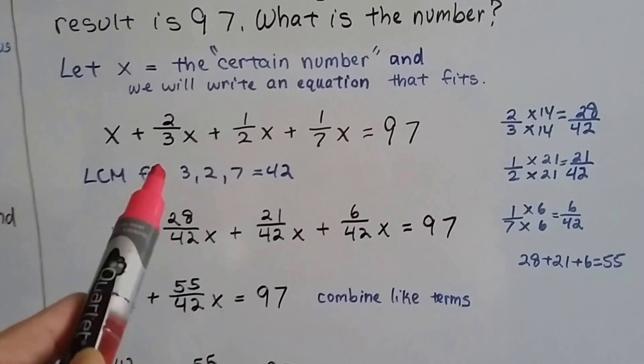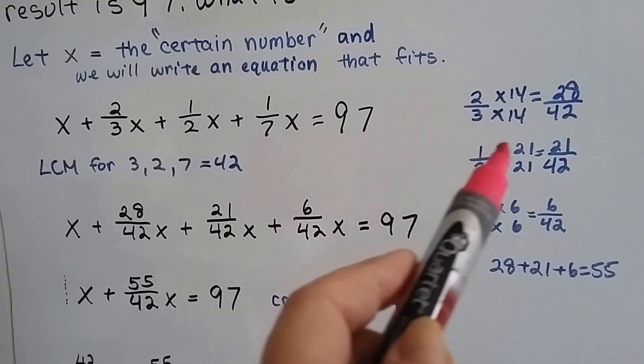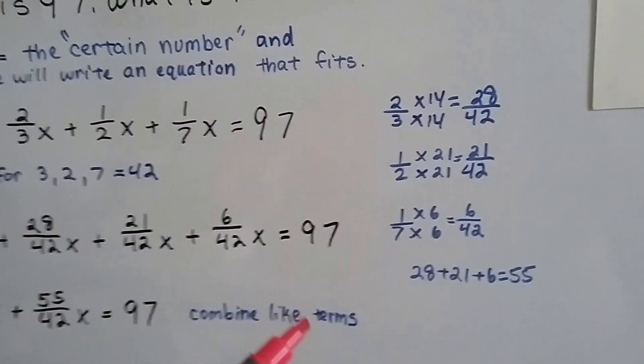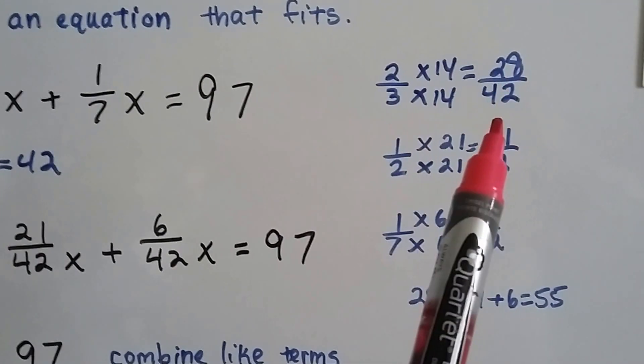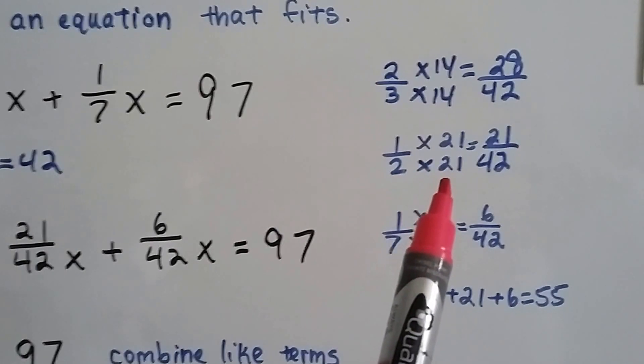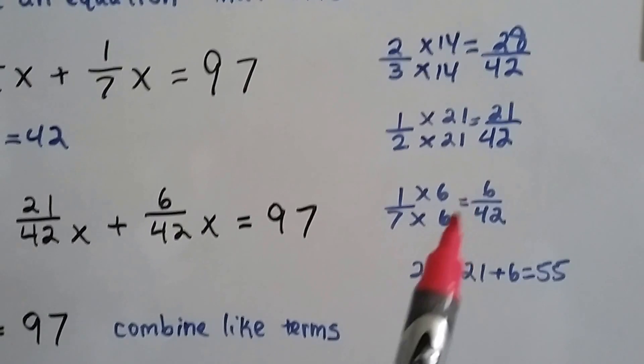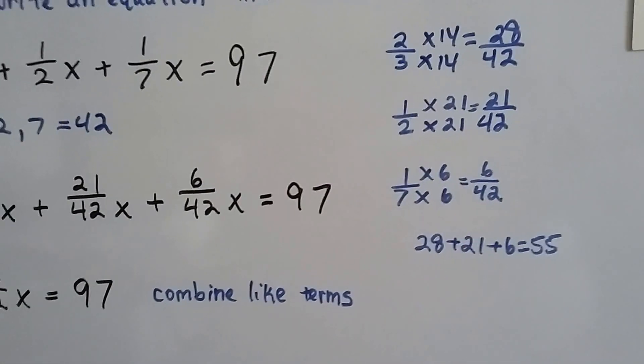So now what we need to do is whatever we multiply this 3, this 2, or this 7 by to get to a 42, that's what we need to multiply the numerator by. So for two-thirds, we multiply both by 14, and we get 28 over 42. For a half, we have to multiply it by 21, so the numerator and denominator get multiplied by 21 to get 21 over 42. And 7 needs to be multiplied by 6 to get to 42, so we have 6 over 42.